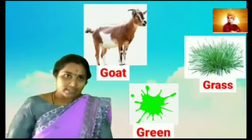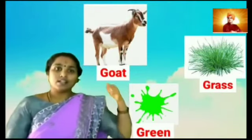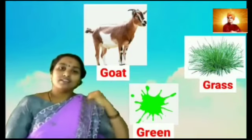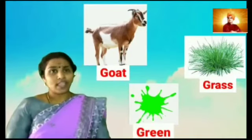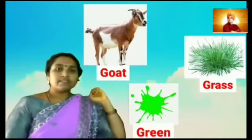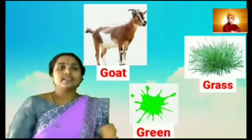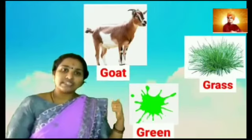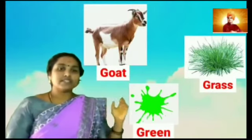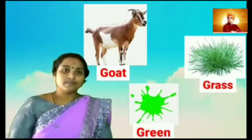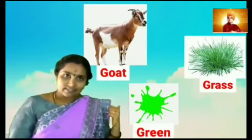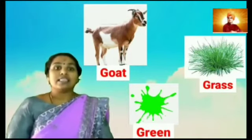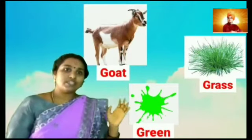Ok children, now we have learnt three sight words: goat, green, grass. From these three sight words, we have to look at the first letter. See the first letter. What is that letter? That is letter G.